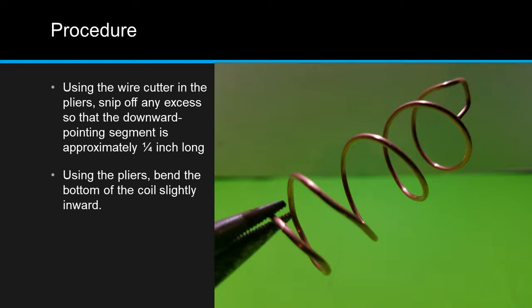Using the pliers, bend the bottom of the coil slightly inward. You may have to adjust this bend a little later on.